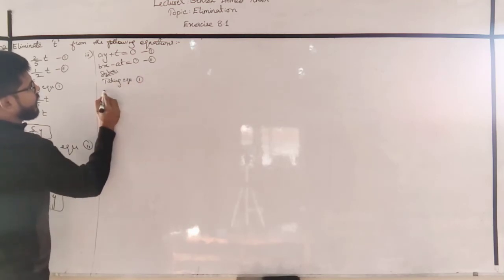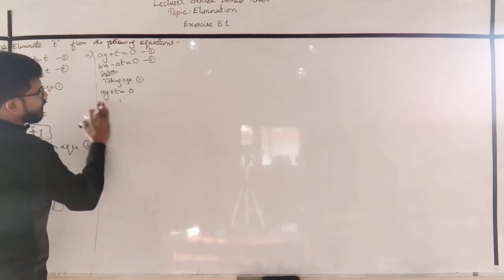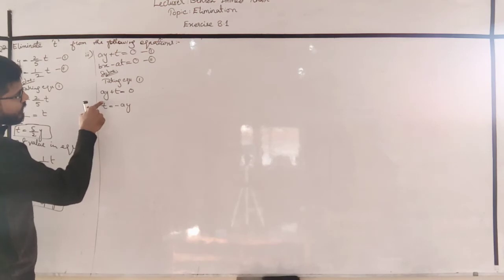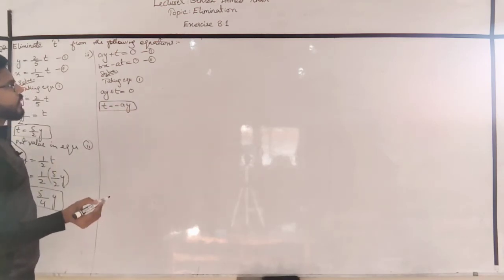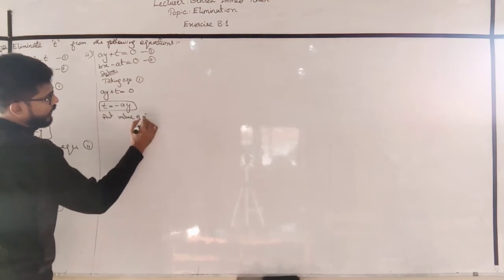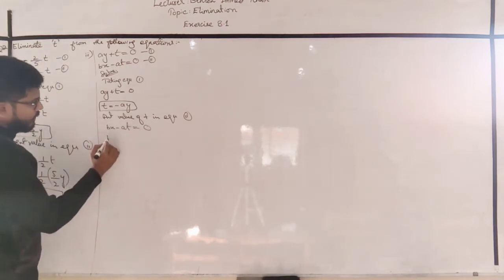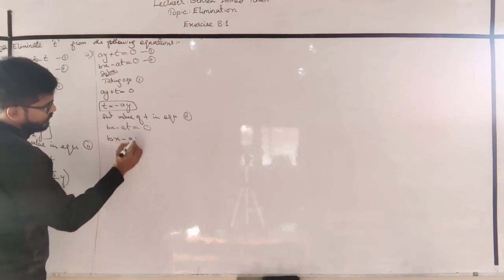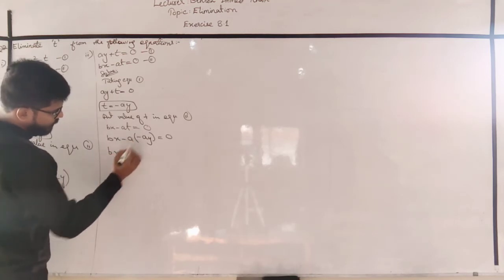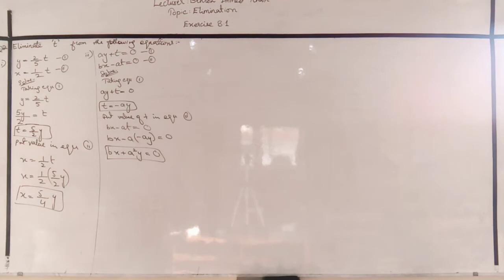Taking equation 1: ay + t = 0. Isolating T: t = minus ay. Now put the value of T in equation 2: bx minus a(t) = 0 becomes bx minus a(minus ay) = 0, which gives bx + a²y = 0. Look — T is not present in this equation. This is the answer.